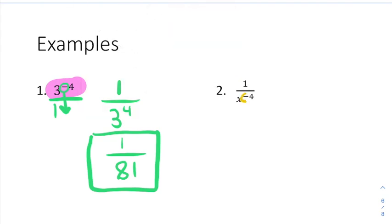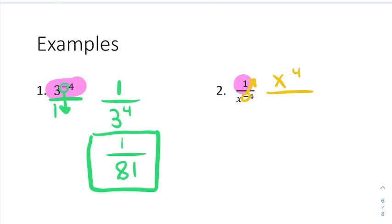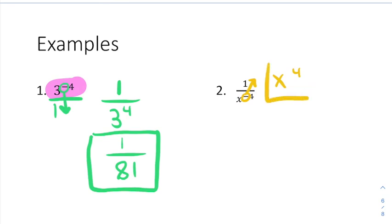In example 2, we again see a negative exponent, which is always a message that we need to move to the other side of the fraction. So this x to the negative 4th moves up. Once you move it, you've completed the message, so now it just says x to the 4th — we don't keep the negative or we'd get stuck in a loop moving it up and down. The denominator is now empty, and since dividing by 1 doesn't do anything, we don't need the fraction at all. The answer is just x to the 4th.